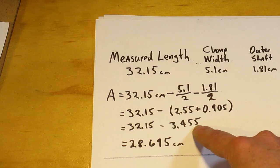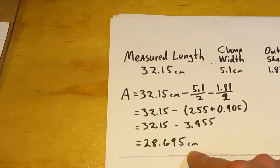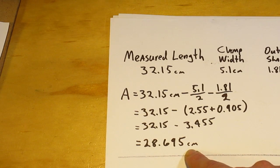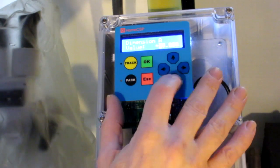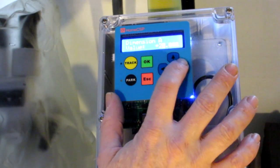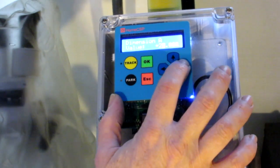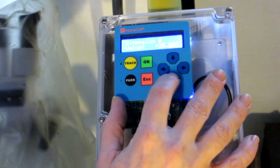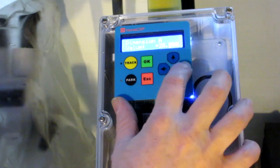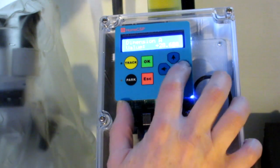So now we're subtracting 3.455, which gives us our final measurement for the minimum actuator arm length. So now I'm going to enter in that minimum length of 28.695.